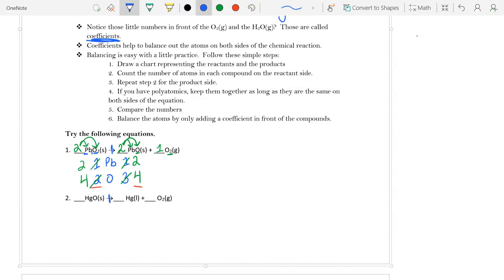Now, if we look at number two, number two has mercury, Hg, and oxygen, which is an O. It has solid mercury oxide turning into liquid mercury and oxygen gas.